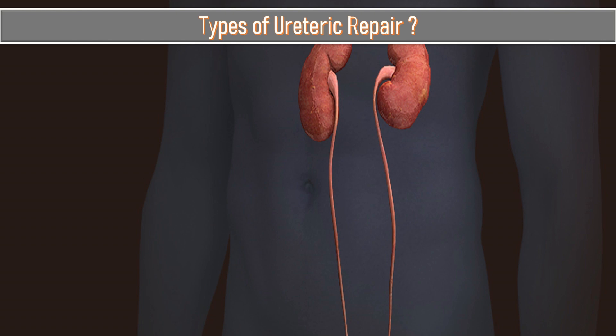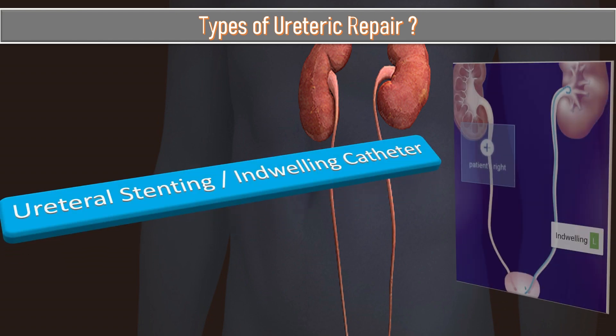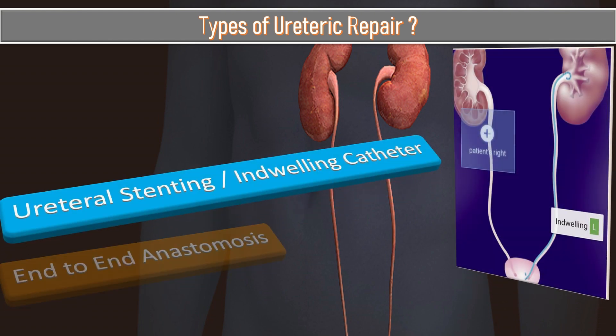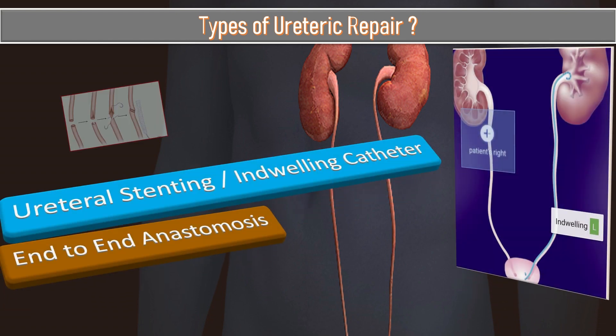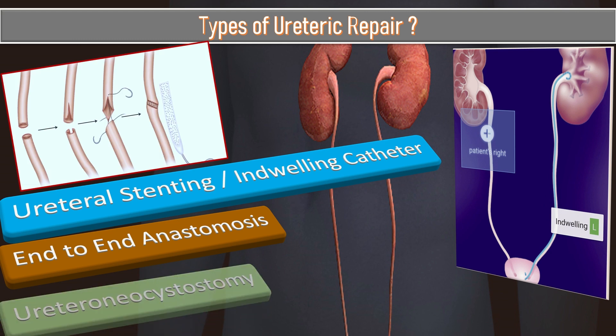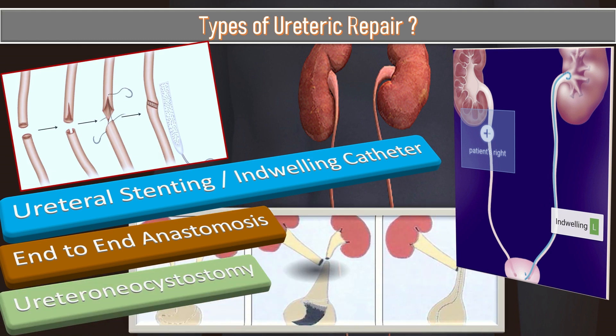The commonest types of ureteric repair include: first, ureteral stent or indwelling catheter; second, end-to-end anastomosis; and third, ureteroneocystostomy. We will now talk about the steps of ureteric repair using the end-to-end anastomosis technique.